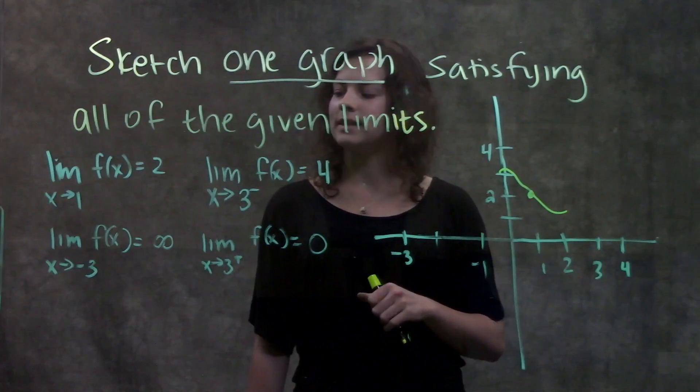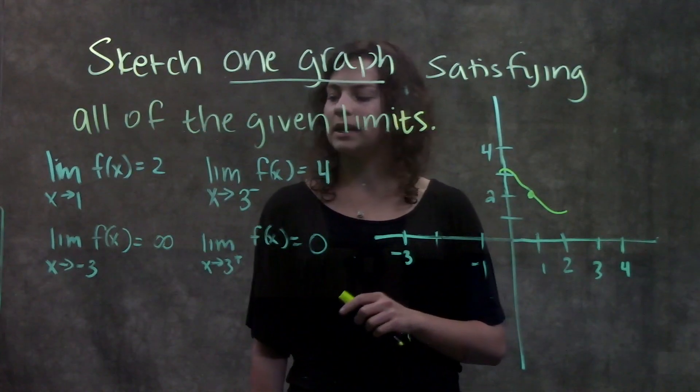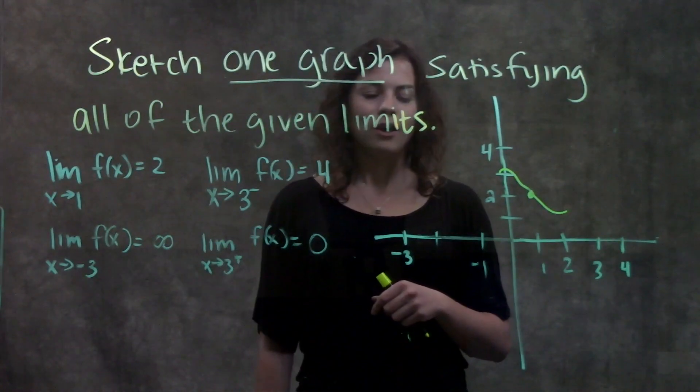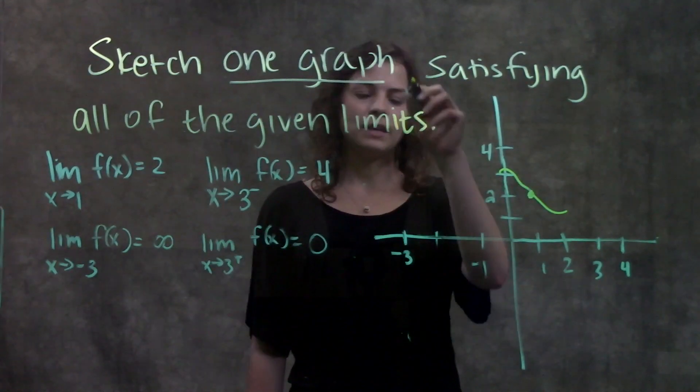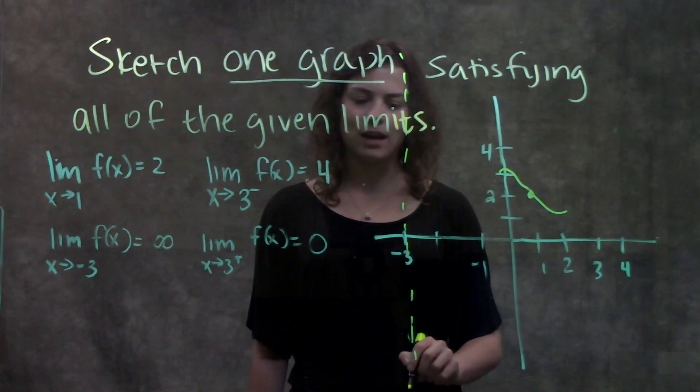Then we go to the next one. It says the limit as x approaches negative 3 is equal to infinity. We're going to go to x equals negative 3. Since it's approaching infinity, that means that there's actually a vertical asymptote there.